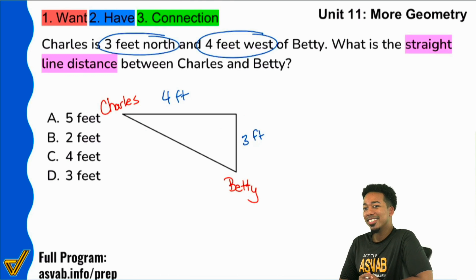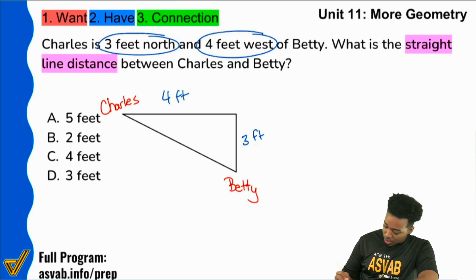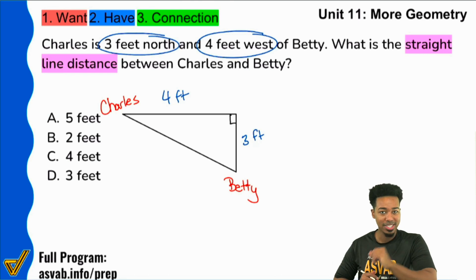Now, what do you notice? Well, if you're going north and then you're going west, that's a 90 degree angle. Now, if you realize that this is a right triangle, boom, you're in business.